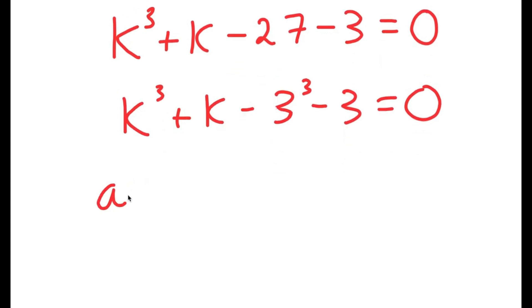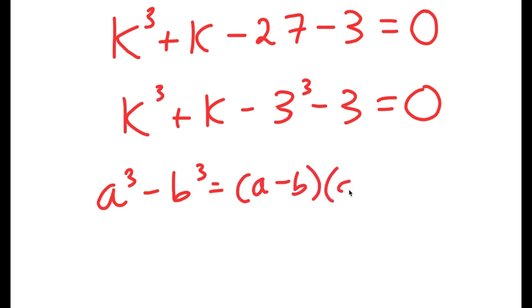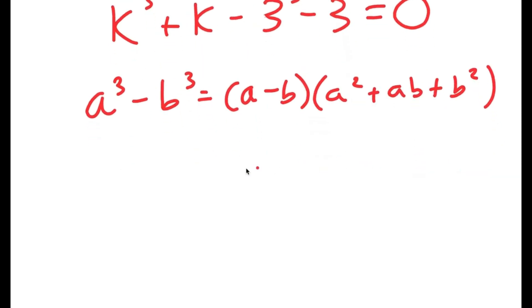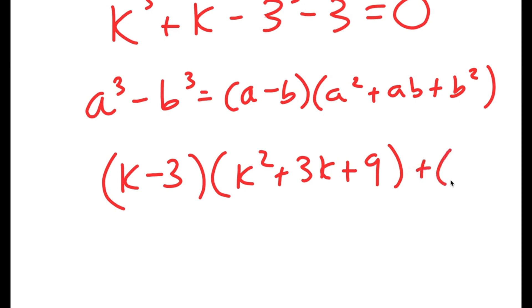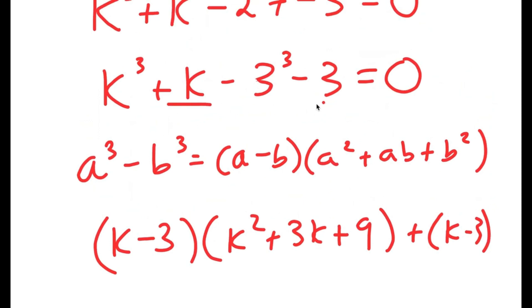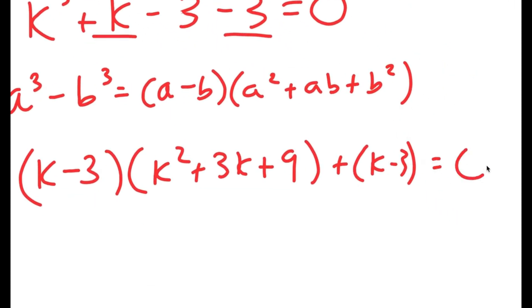If I have something in the form a to the power of 3 minus b to the power of 3, this is equal to a minus b times a squared plus ab plus b squared. So this is equal to k minus 3 times k squared plus 3k plus 9. And we can't forget our plus k minus 3 at the end, which is this part right here. And this is equal to 0.